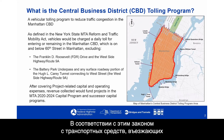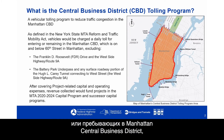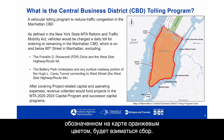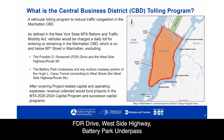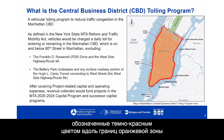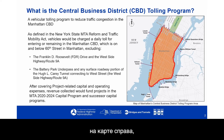As defined by the Act, vehicles entering or remaining in the Manhattan Central Business District on or below 60th Street — shown on the map in orange — would be tolled. The FDR Drive, Westside Highway, Battery Park Underpass, and any surface roadway portion of the Hugh L. Carey Tunnel connecting to West Street — the dark red line along the edges of the orange area — would be excluded from the toll.